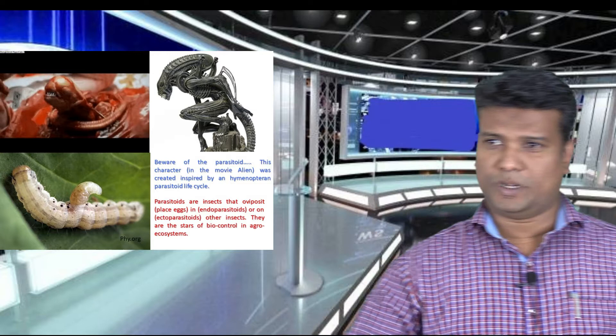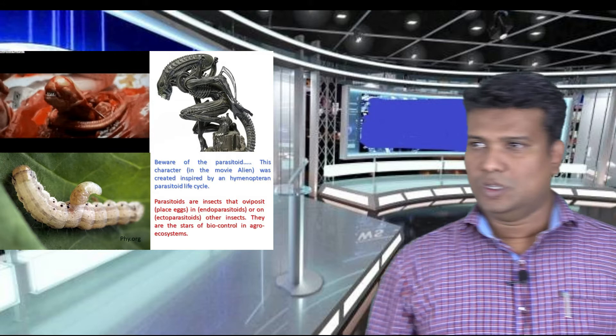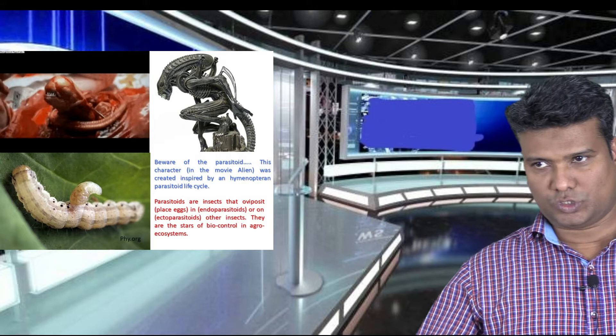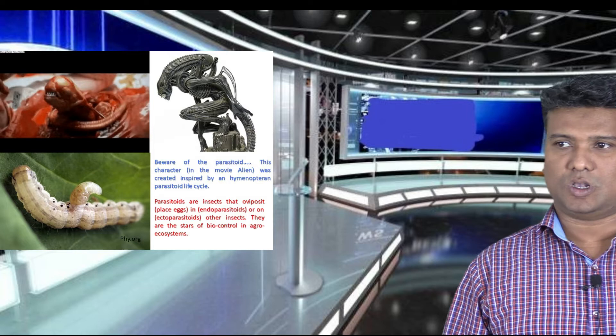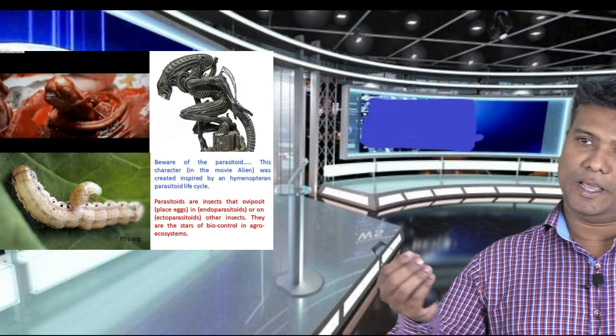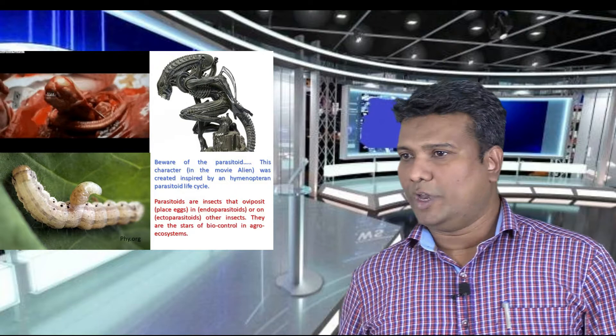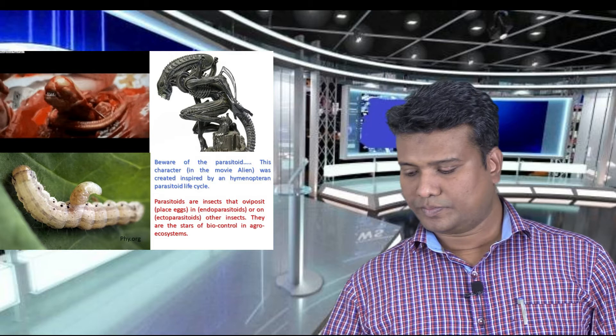This slide shows a hymenopteran parasitoid coming out of a lepidopteran pest. These parasitoids are insects that oviposit or place their eggs on the pest — that pest is called a host. The organism which affects the host is called a parasitoid. Mostly these parasitoids are hymenopteran; they place their egg on or inside the host, classified as endoparasites or ectoparasites. These creatures are very useful in biocontrol of agricultural pests.